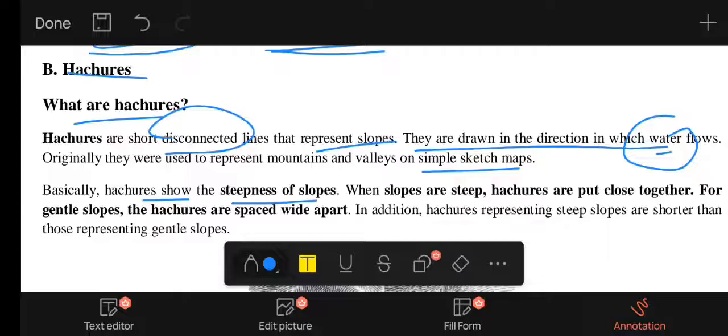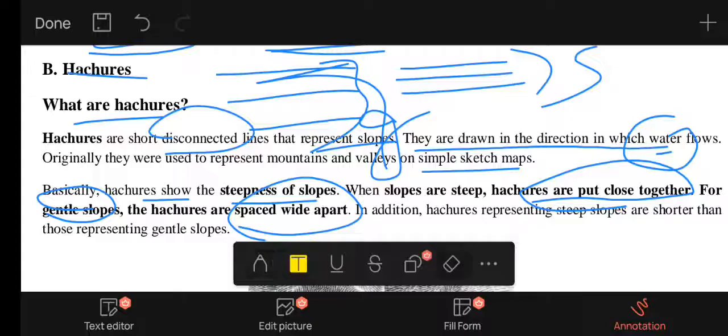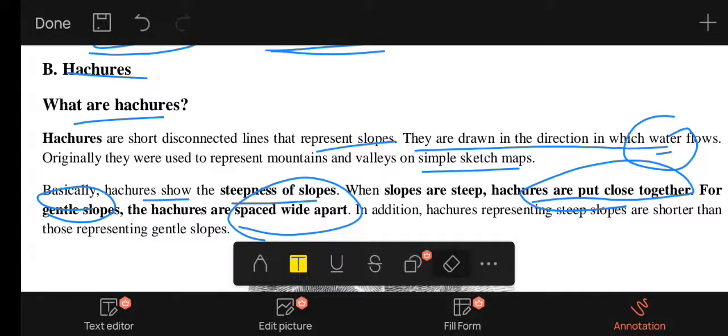Hachures are used to show the steepness of slopes. When slopes are steep, hachures are put close together. On gentle slopes, they are spaced wider apart. The closer the hachures, the steeper the slope. The wider apart, the gentler the slope.